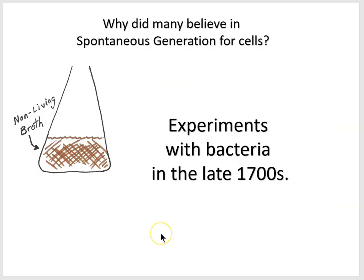So why did people believe that bacteria could spontaneously generate? It had to do with a series of experiments in the late 1700s, often involving a flask with some broth — like chicken broth — providing nutrients to feed any living cells. These nutrients that would feed living cells were presumably also the exact kind of stuff you'd need to spontaneously generate new cells.